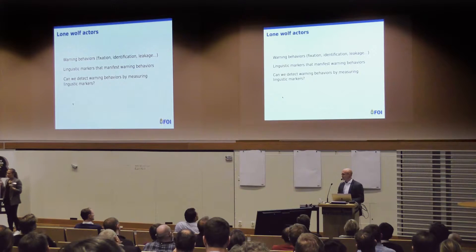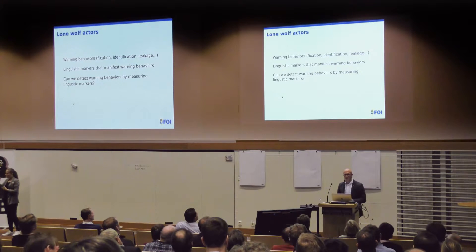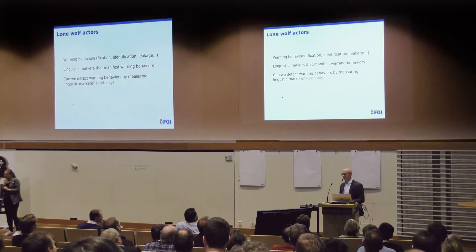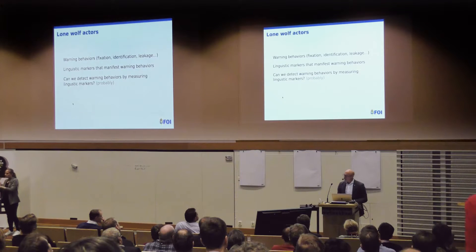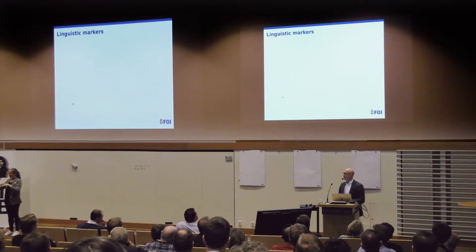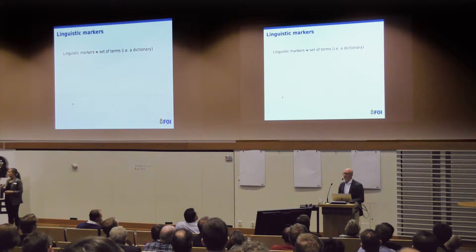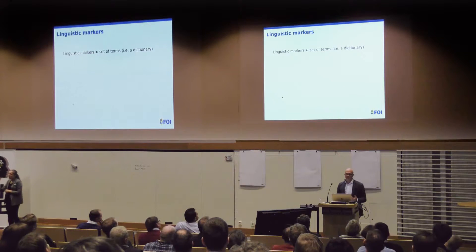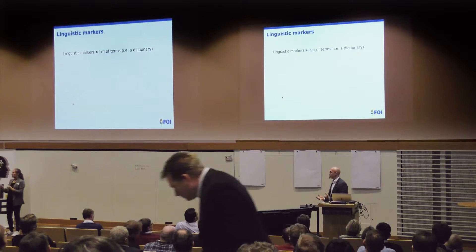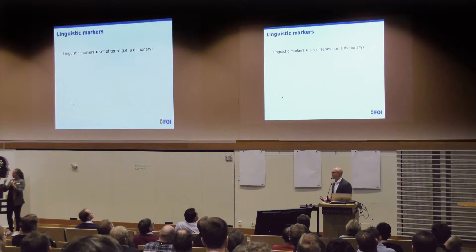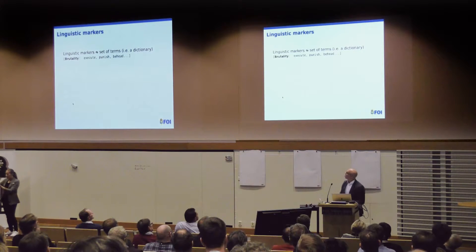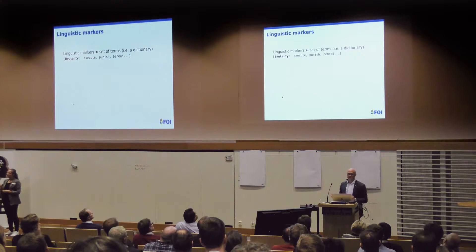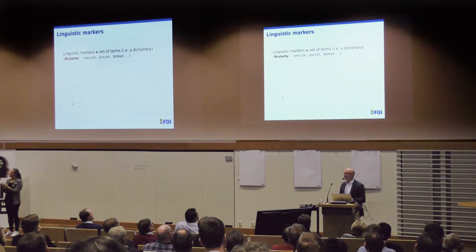The problem becomes much more tractable. Can we detect linguistic markers that manifest warning behaviors? We're cautiously optimistic of the potential to at least flag content so analysts can use this as a form of information access. What I mean by linguistic markers is actually quite simple — it's a set of keywords, a dictionary. So for fixation, we might list a number of issues significant for various types of lone wolf actors. In the case of Breivik, that would be terms like 'cultural Marxism' and 'Europe.' For something like brutality, we would list keywords like 'execute,' 'punish,' 'behead' — violent terms like that.